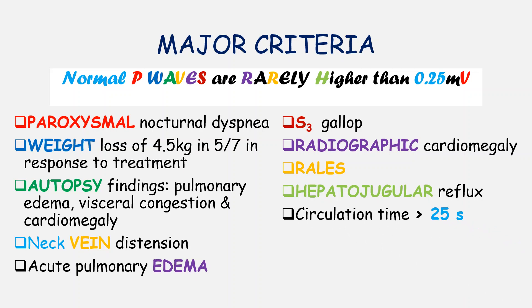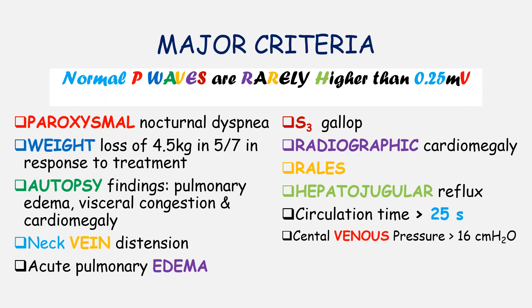The 0.25 in the mnemonic stands for 25 seconds of circulation time. A circulation time exceeding 25 seconds is one of the major criteria. The last V in 'millivolts' stands for venous pressure — specifically, invasive monitoring of the patient's central venous pressure. To meet this criterion, the central venous pressure needs to exceed 16 centimeters of water.